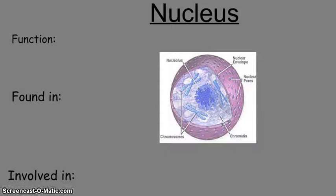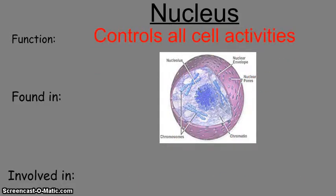You'll see a picture of a nucleus. You should be able to identify the nucleus by its structure, and know that its function is to control all cell activities — it's like the brains of the operation. It decides what gets done and when. The nucleus is also where we find all our DNA and genetic material, including the chromosomes visible inside it.